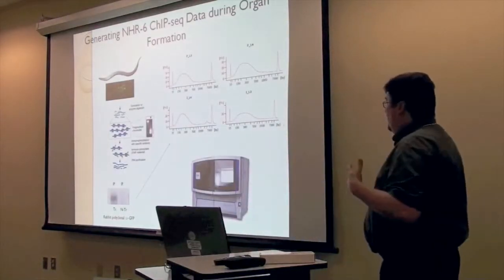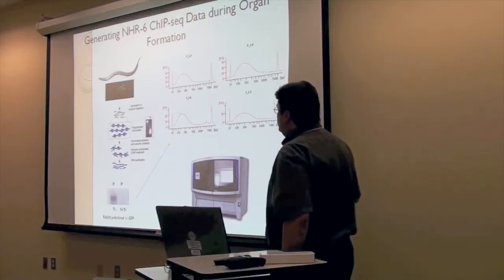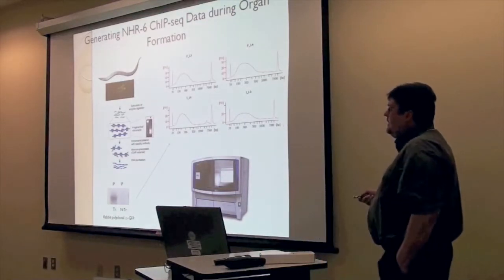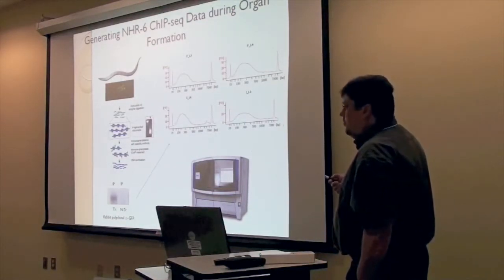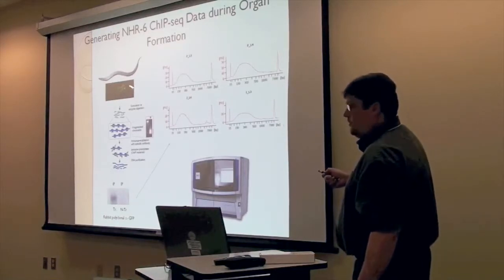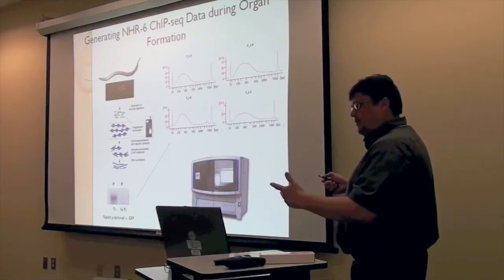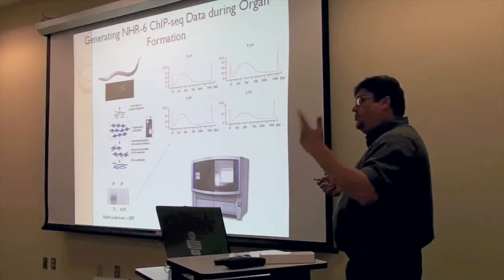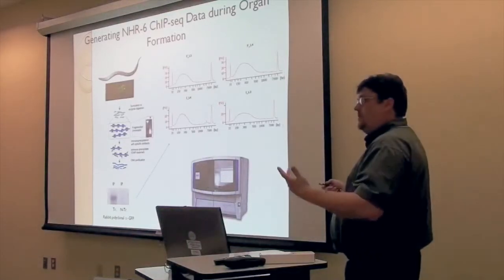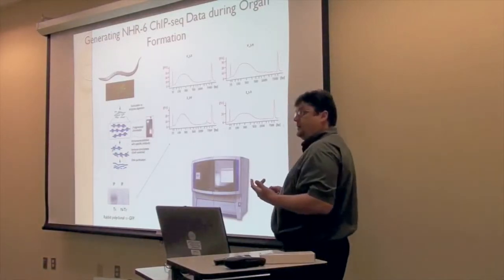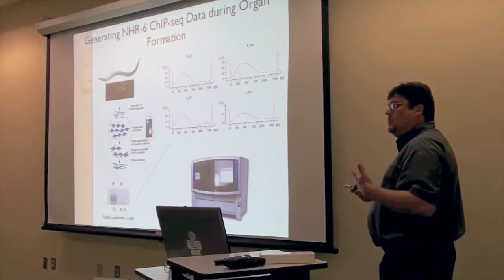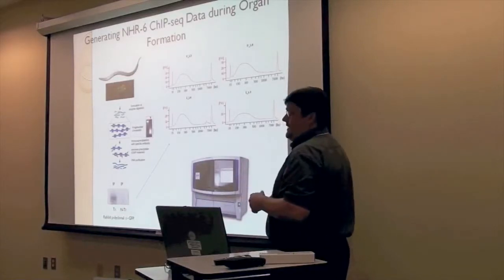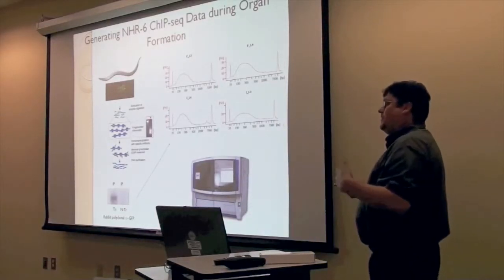Doing a ChIP-seq experiment requires a lot of different steps. We start with the whole animal expressing NHR6 fused to GFP. NHR6 in the worm is only expressed in the spermatheca organ at L3 and L4 stages and in two chemosensory neurons throughout its lifecycle, so it's not very broadly expressed. This is good because most of what we'll get will apply to our developmental system, but the challenge is it's not expressed in many cells and not highly expressed, making it hard to get sufficient amounts of immunoprecipitated DNA.